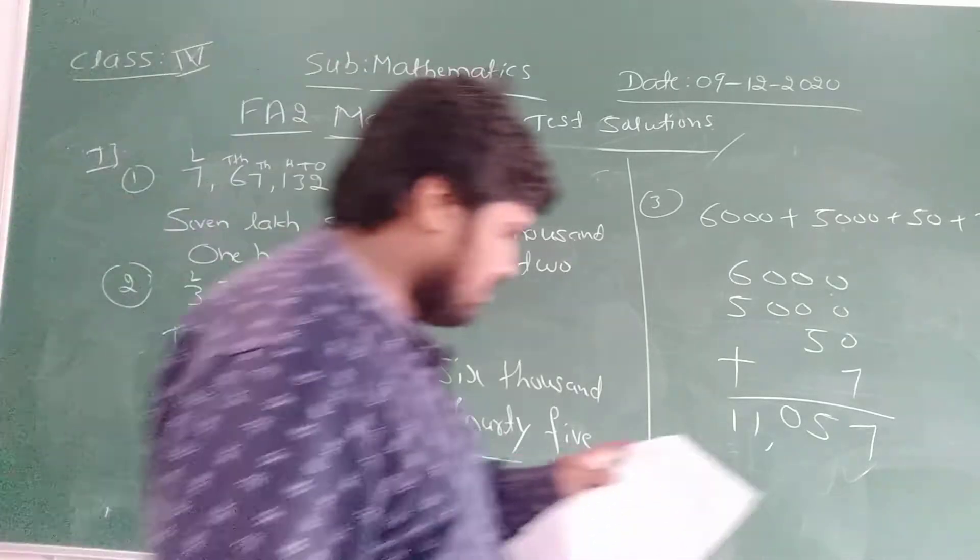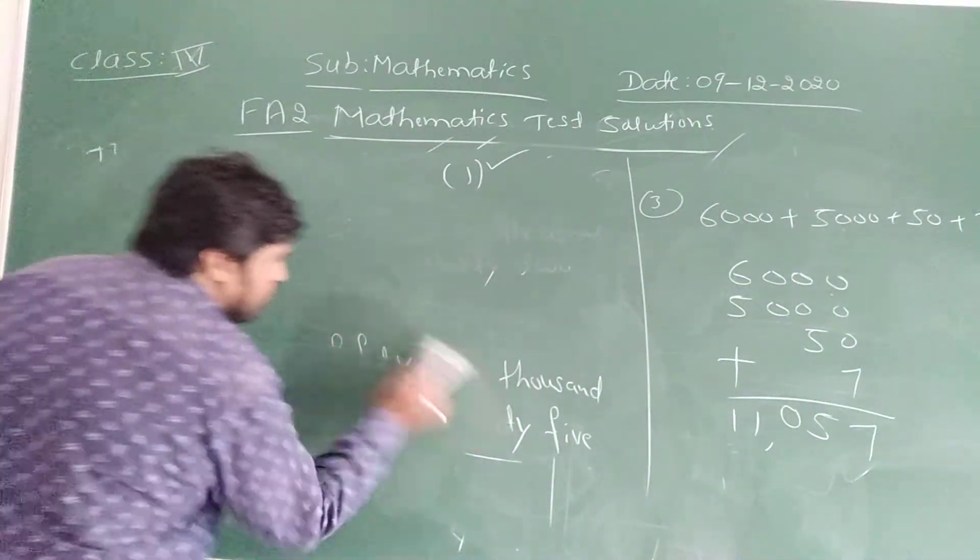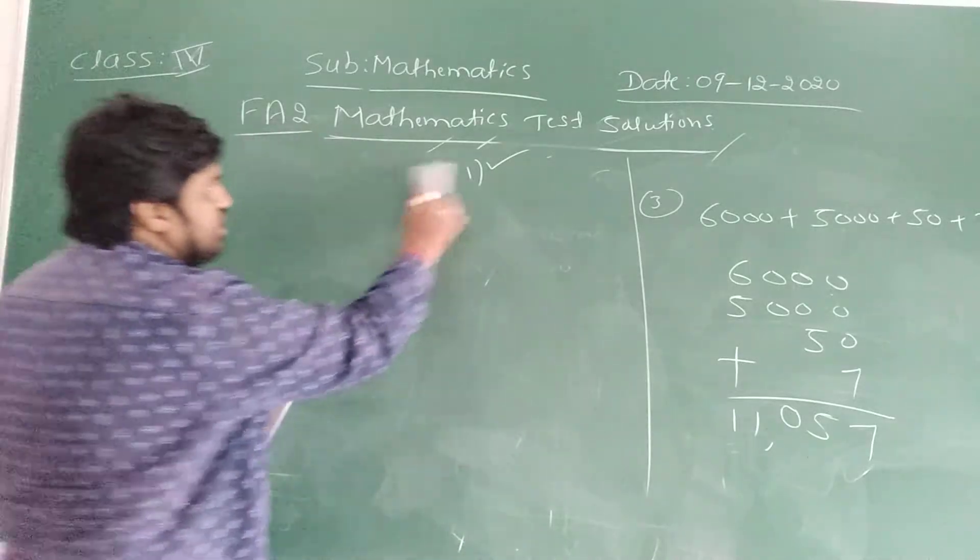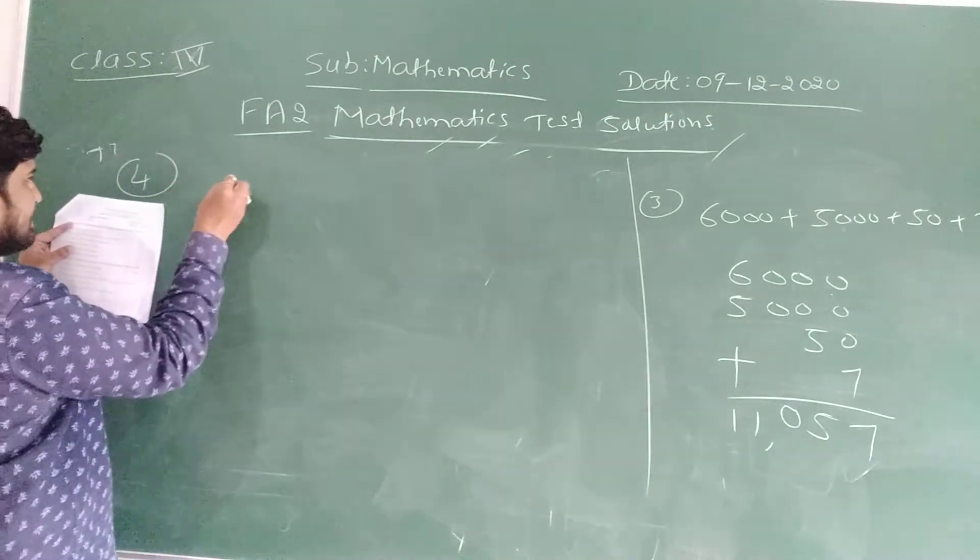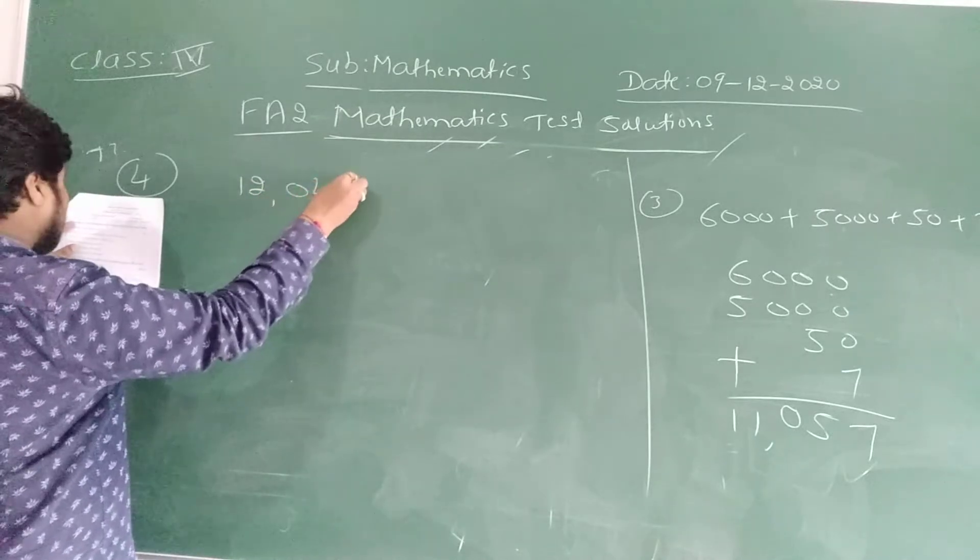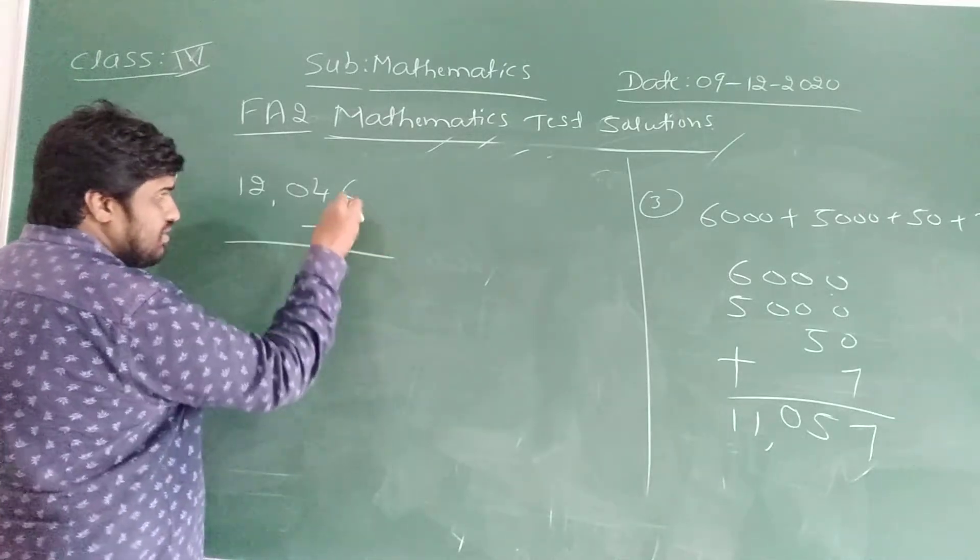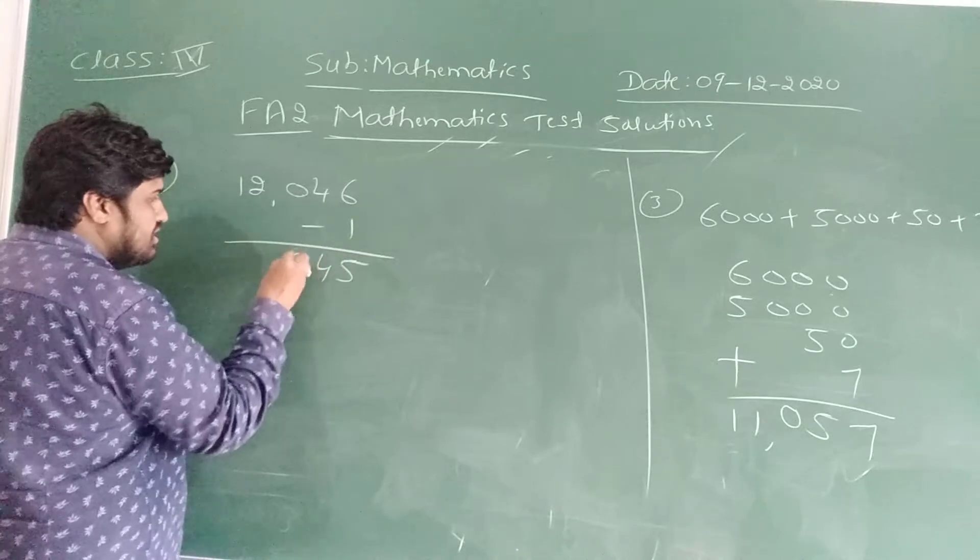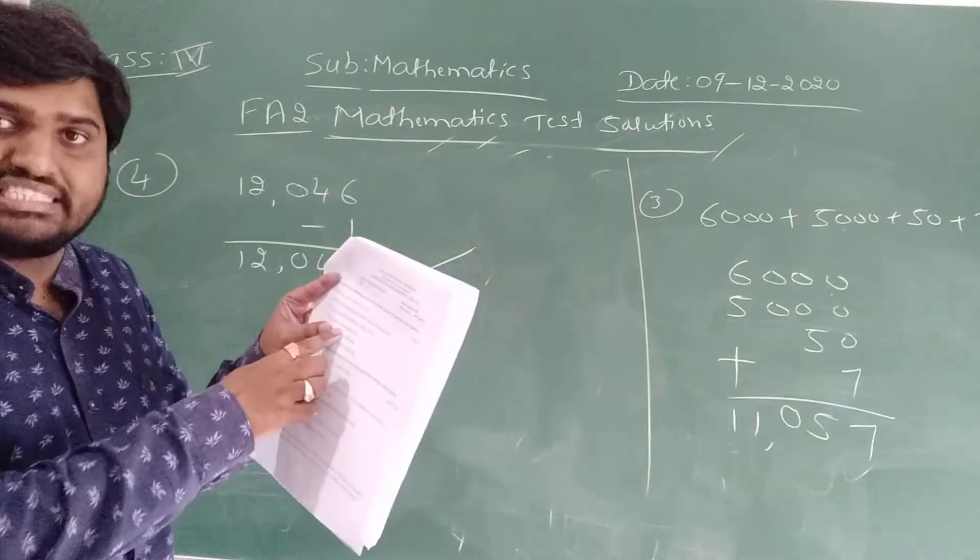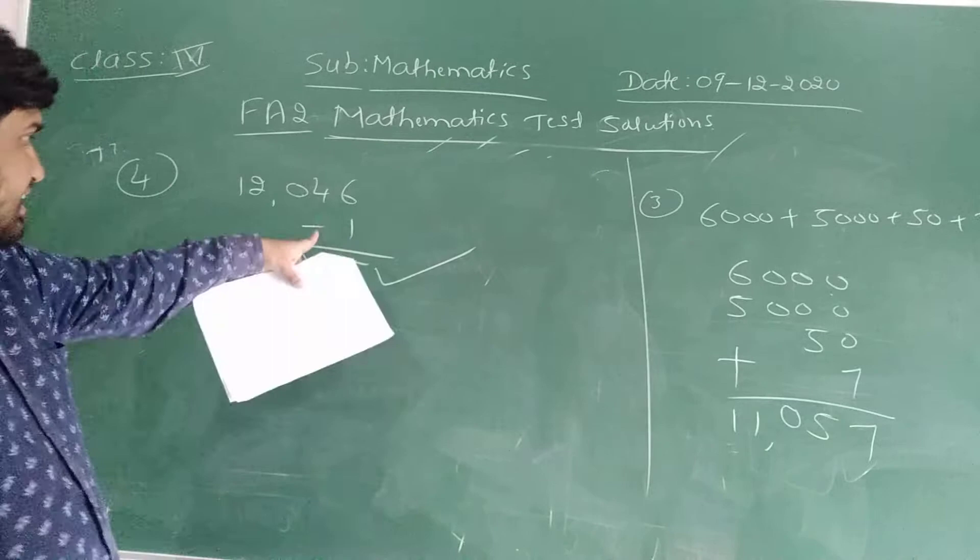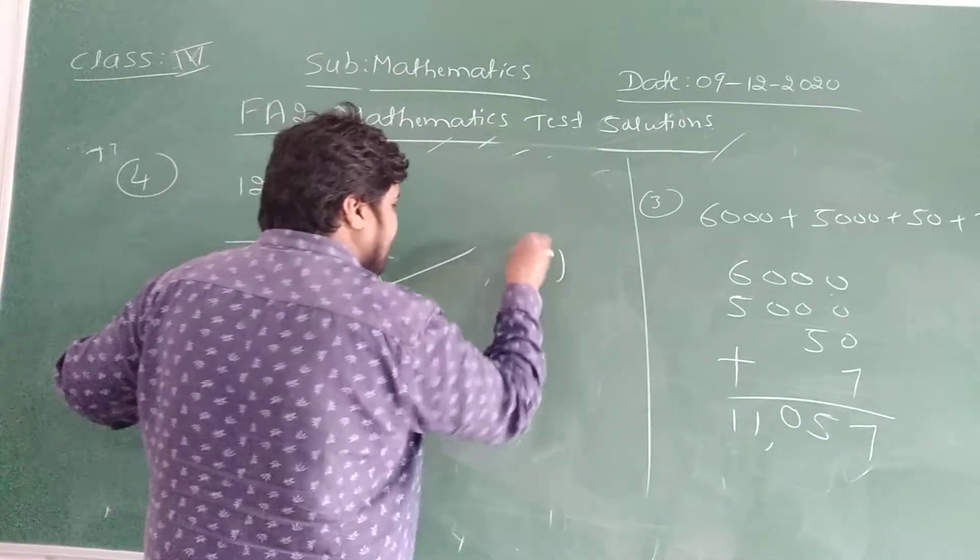Now next one, question number 4, write the predecessor of 12,046. Dear children, you know right, meaning of predecessor. Predecessor means just you have to subtract. Write the predecessor of 12,046. Predecessor means just you have to subtract 1. See, I am going to subtract 1. 6 minus 1 is 5, 4, 0, 2, 1. That's it. You have to remember, predecessor means you have to subtract 1. 6 minus 1 is 5, remaining as it is. If you write this answer, easily you will get 1 mark.